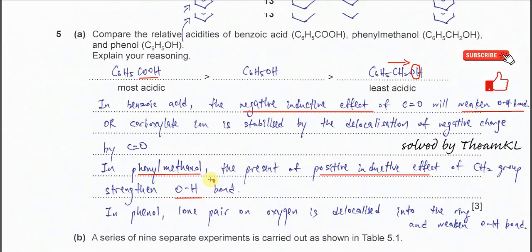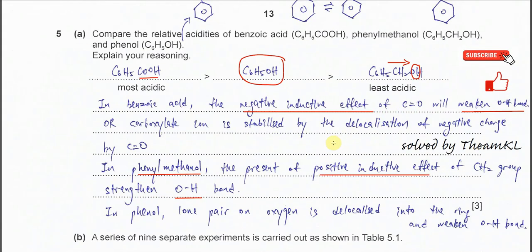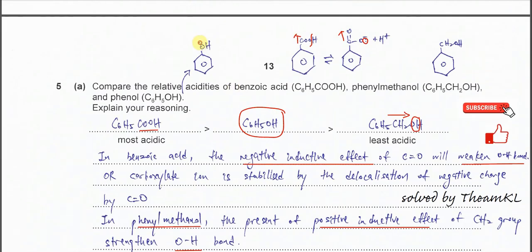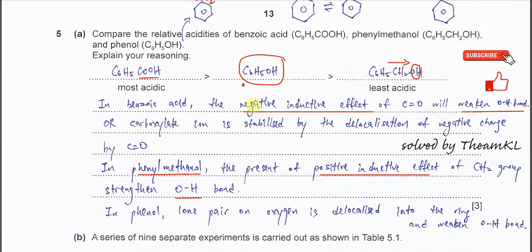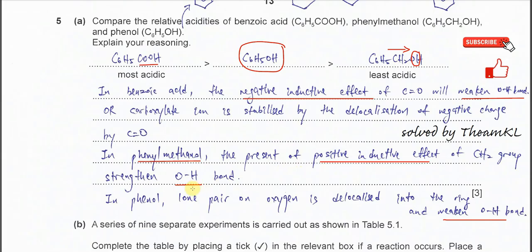What you need to mention for this phenyl methanol is the presence of positive inductive effects of the CH2 or electron donating nature of the CH2 group strengthens the OH bond. So we call this positive inductive effect. When this bond is strengthened, the OH bond is hard to break, the hydrogen ion formed is lesser, so it's therefore less acidic. You can explain the phenol as well. The phenol is still more acidic than this phenyl methanol. Why? You can discuss the delocalization. Phenol has a lone pair on oxygen, so the lone pair can delocalize in the ring, which indirectly weakens the OH bond here.